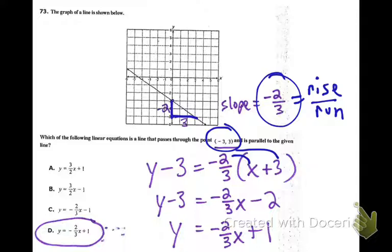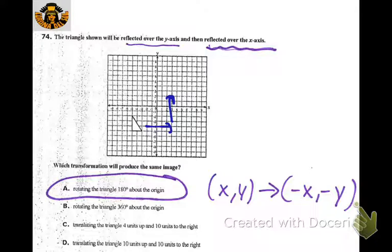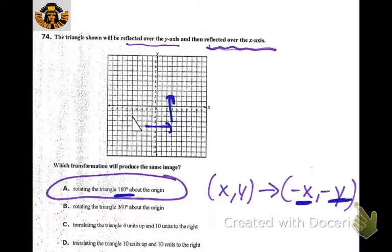If you reflect over the y-axis and then the x-axis, it turns out to be the same thing as rotating 180 degrees about the origin. Reflecting over the y-axis changes the x-coordinate, and then reflecting over the x-axis changes the y-coordinate — that's why it ends up equivalent.